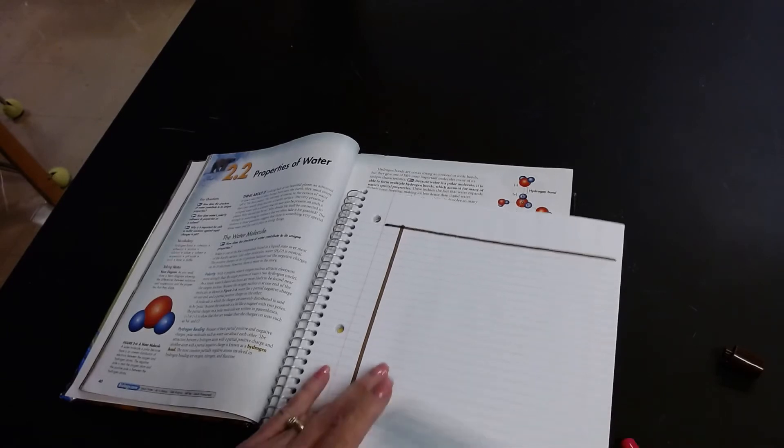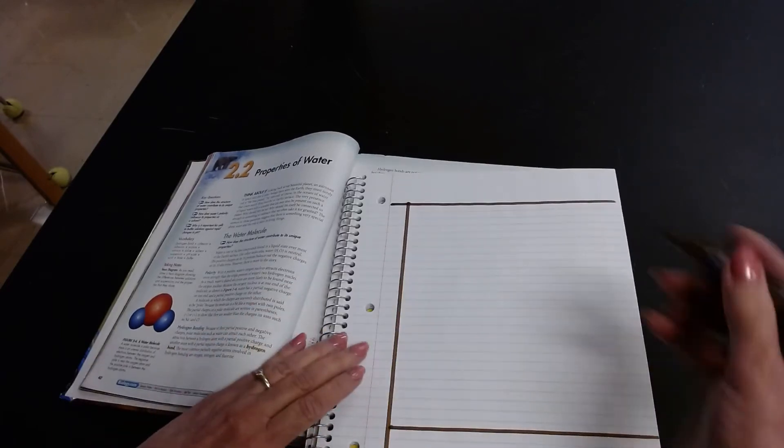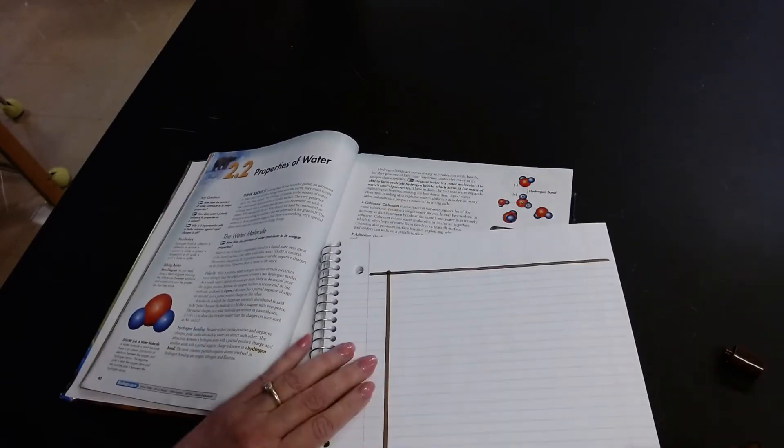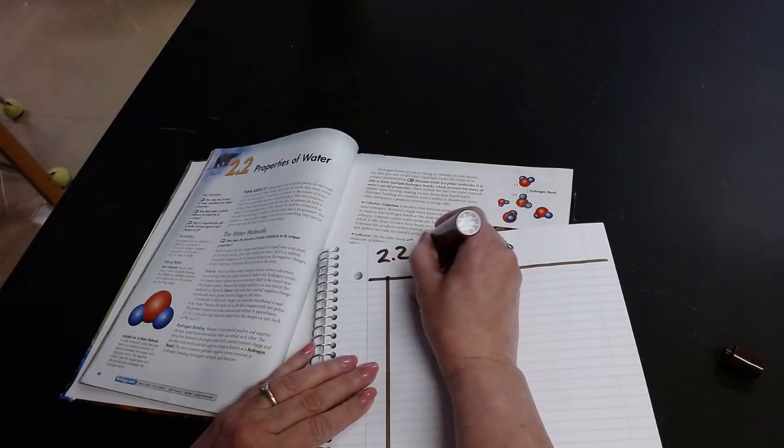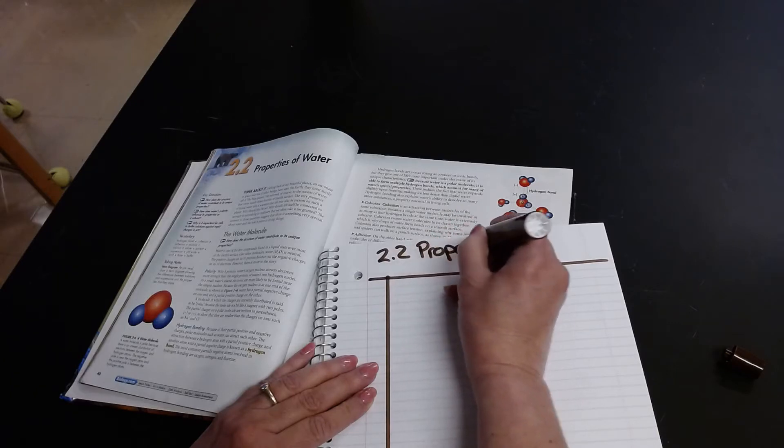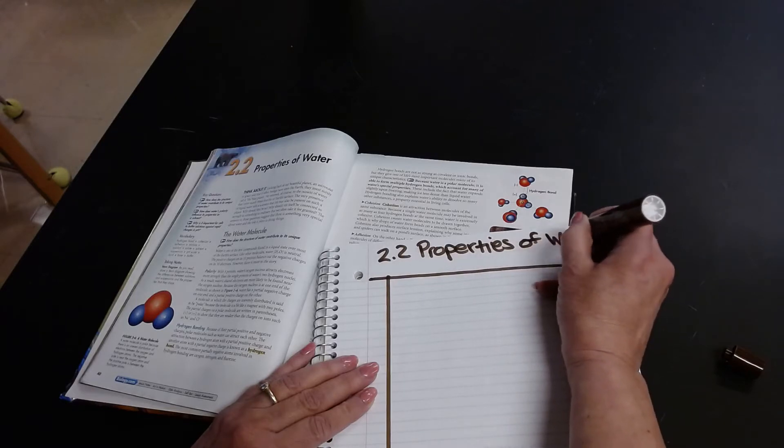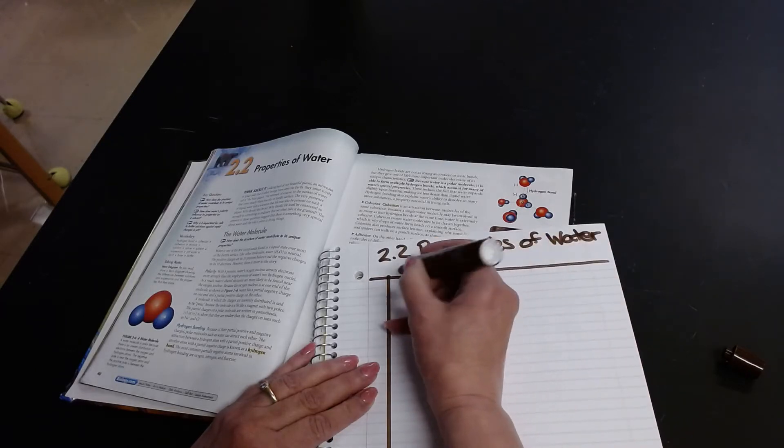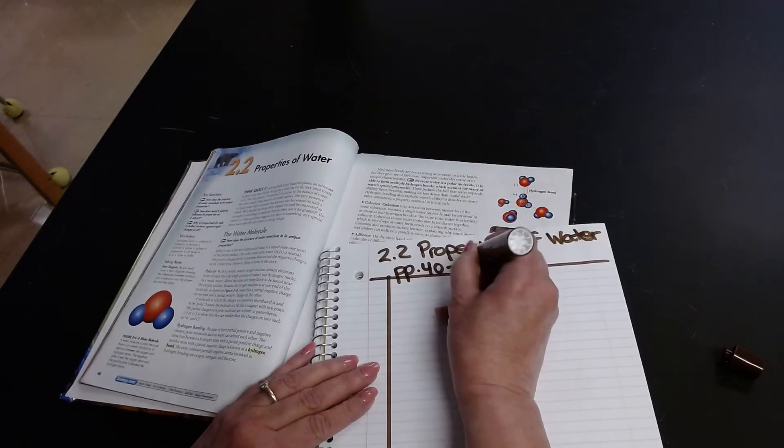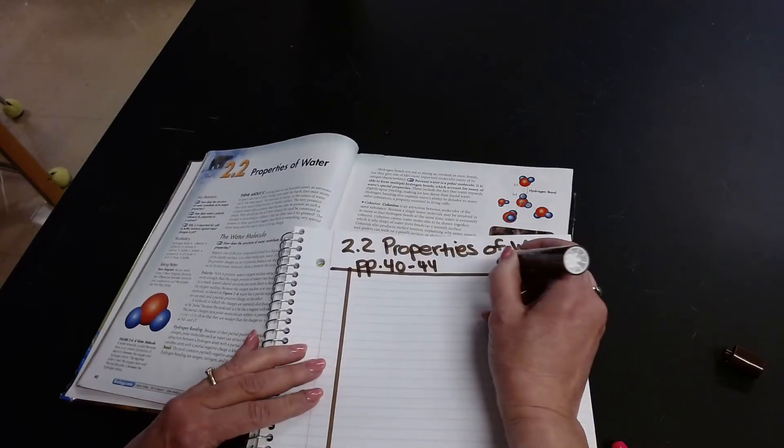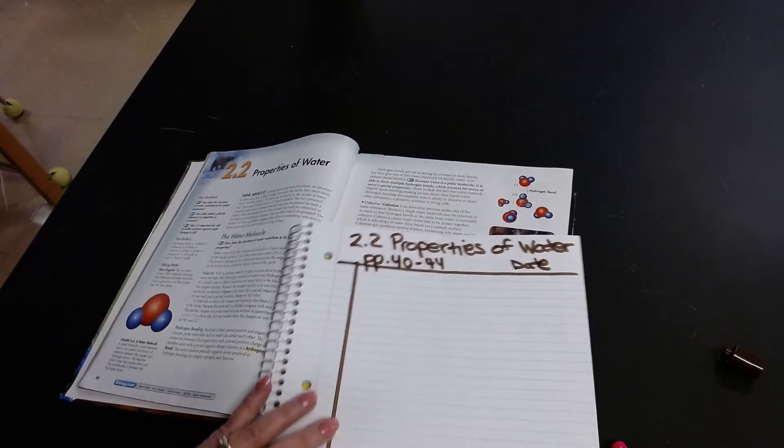So now I've set up my notebook already. I know that my title is going to be at the top. I'm going to write on there with my marker today. But normally I would write with my pencil. I'm going to call it 2.2 properties of water. And again, I'm writing this very large because I'm recording this. I'm doing pages 40 to 44 in the text. And I'll put the date here.